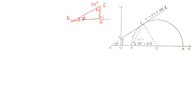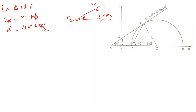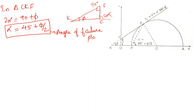The triangle gives us 2 alpha as an exterior angle. The exterior angle equals the sum of the interior opposite angles. So 2 alpha equals 90 degrees plus phi. Therefore alpha equals 45 plus phi divided by 2. We consider the angle of the failure plane — the angle of the failure plane is equal to 45 plus phi by 2.